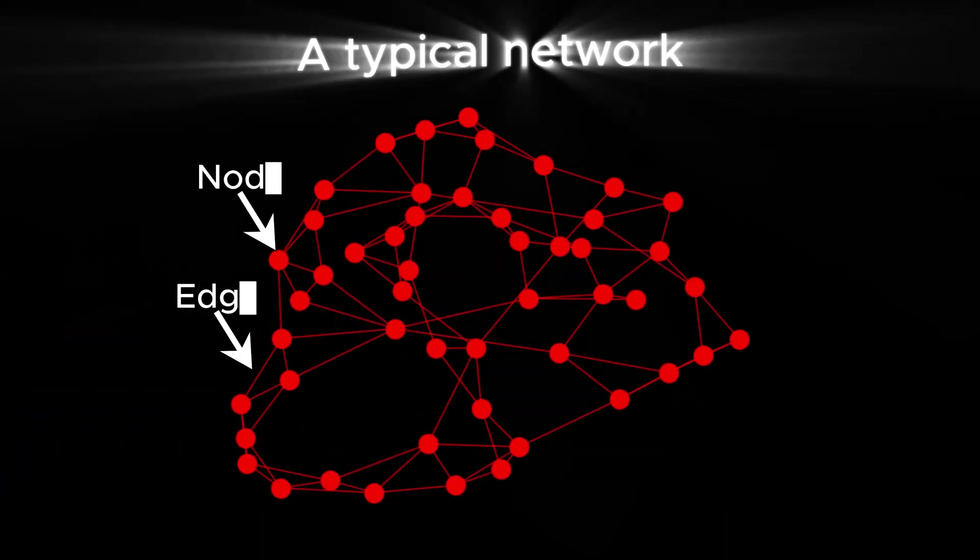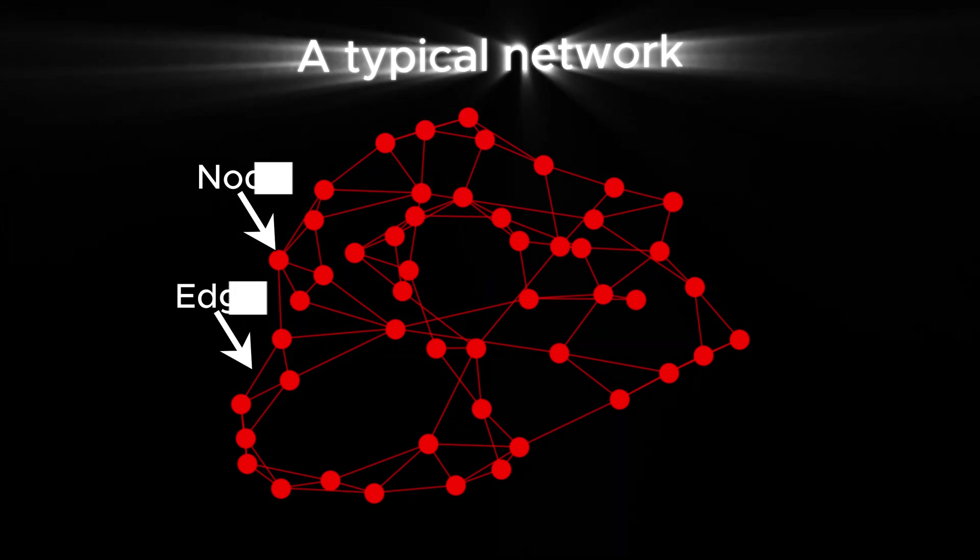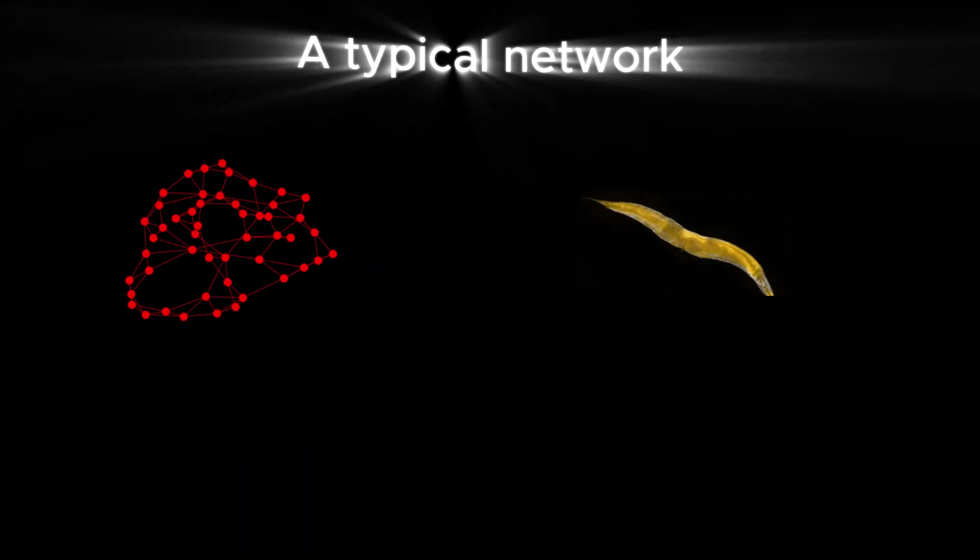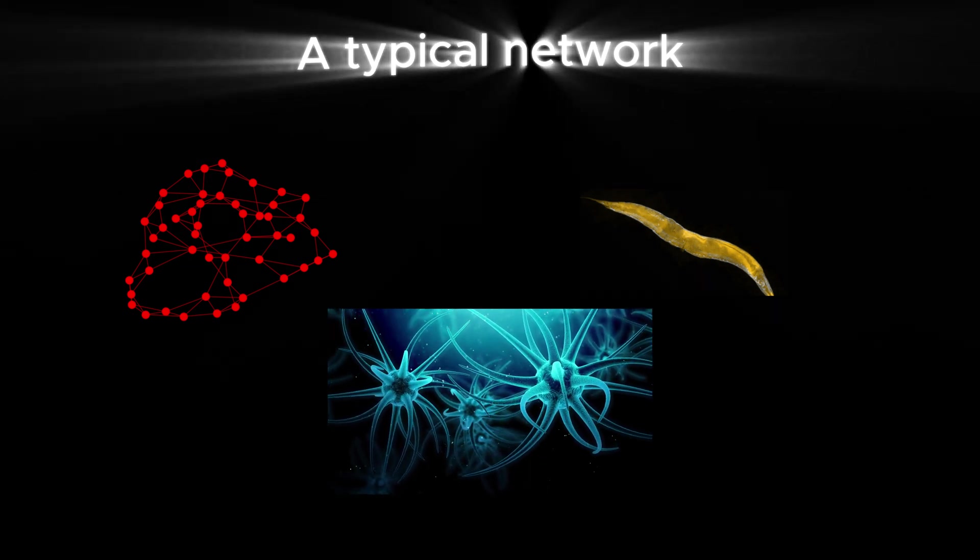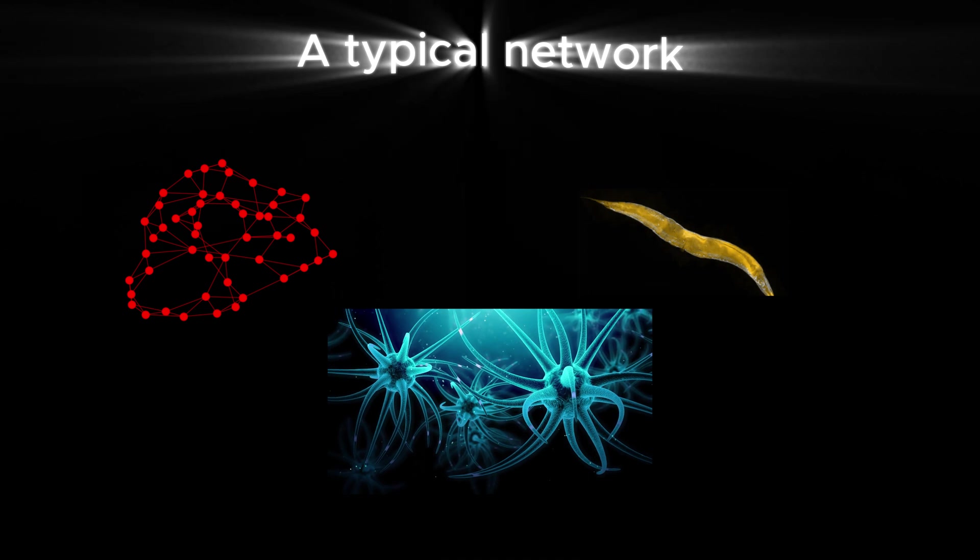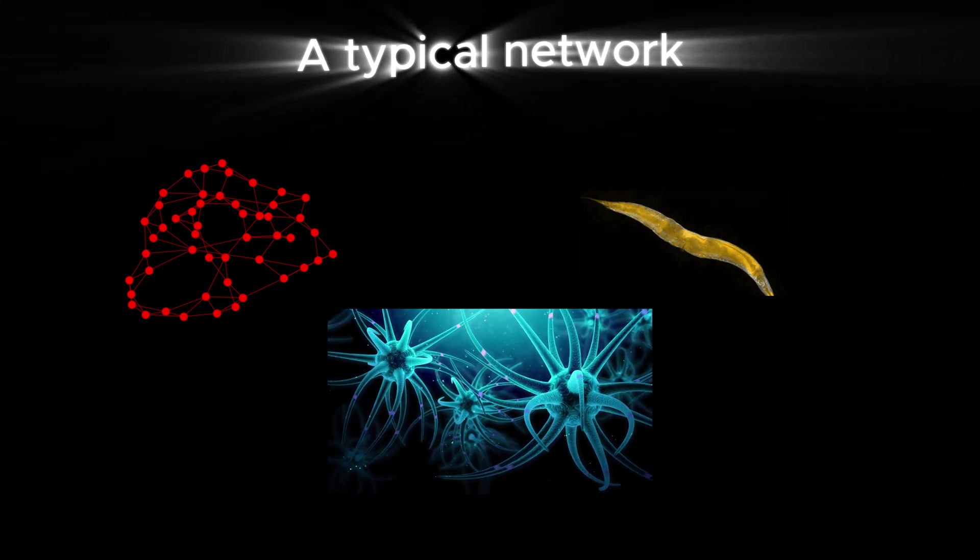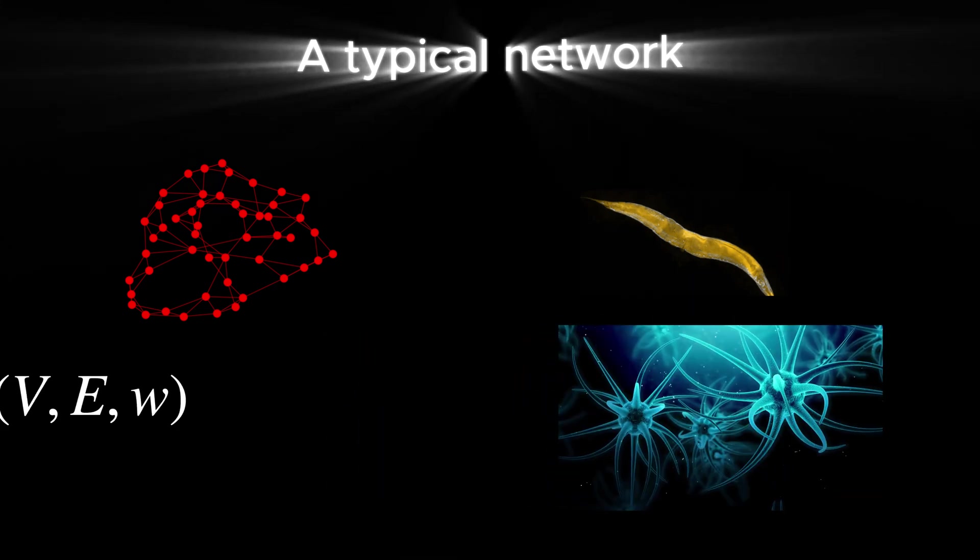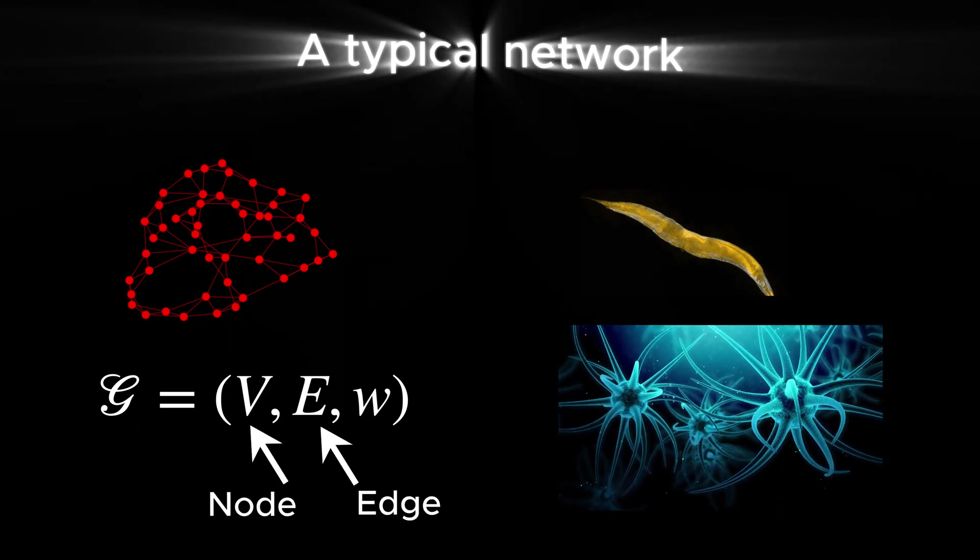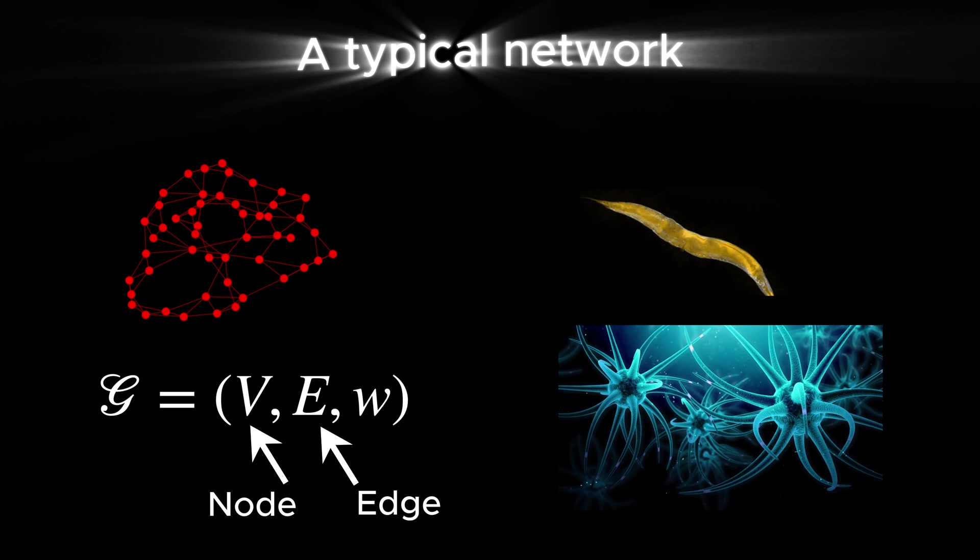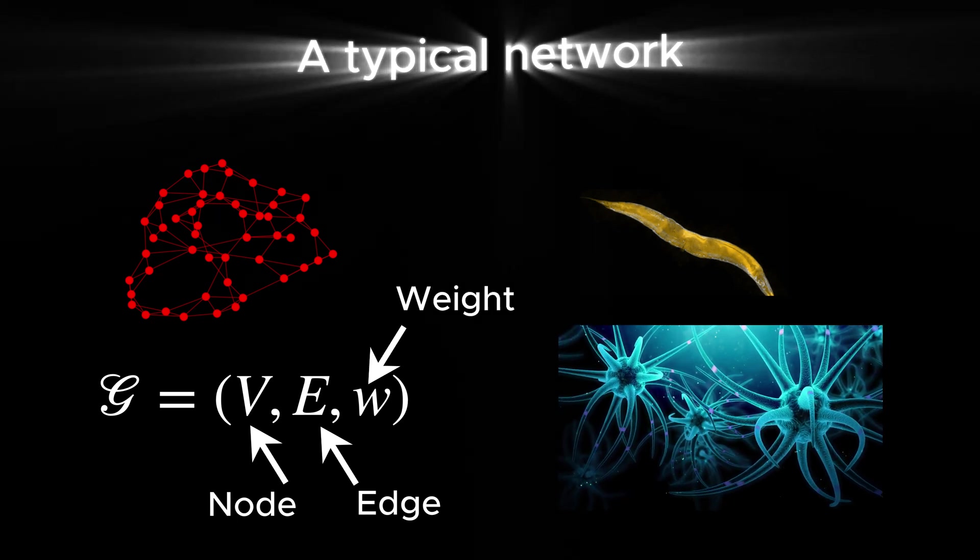Let's break this down. Imagine a network as a collection of nodes and connections. In the case of C. elegans, the nodes are its neurons, and the connections are the synapses and junctions linking them. But how do we mathematically understand this network? In mathematical terms, a network is represented as a graph where each node interacts with others through edges. These edges have weights, reflecting the strength of their connections.